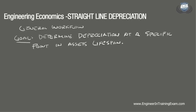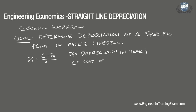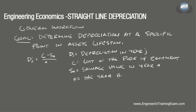The general expression for solving straight-line depreciation is: D sub J is equal to C minus S sub N, divided by N. Where D sub J is the depreciation in year J, C is the cost of the piece of equipment (referred to as basis in tax law), S sub N is the salvage value in year N, and N is the year being analyzed.